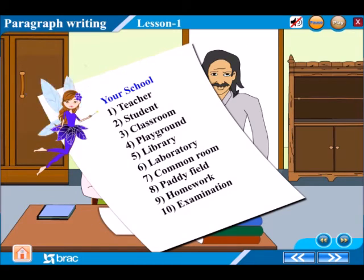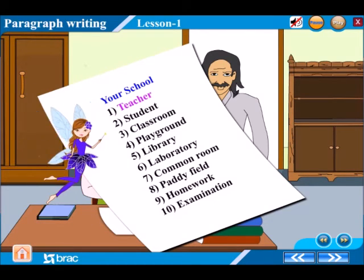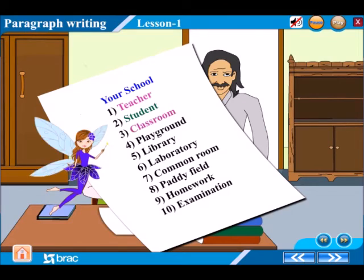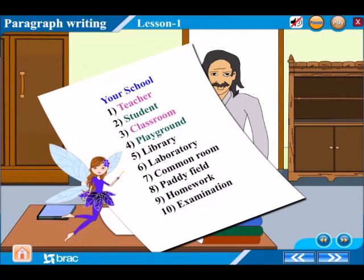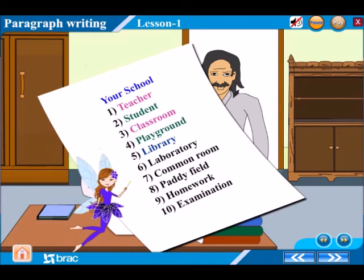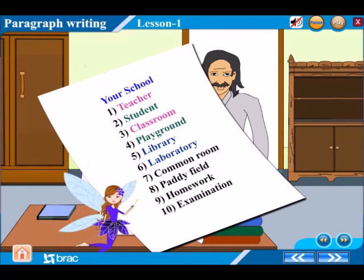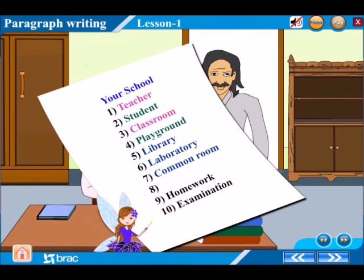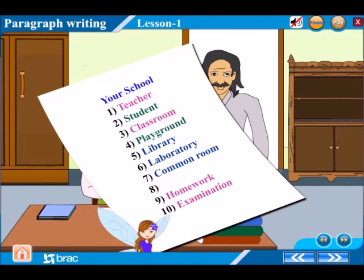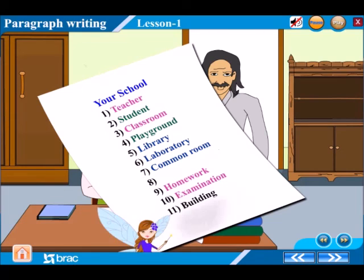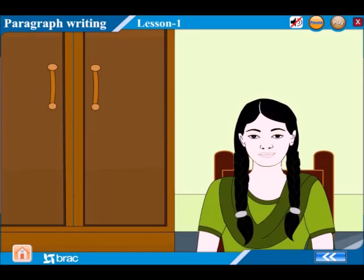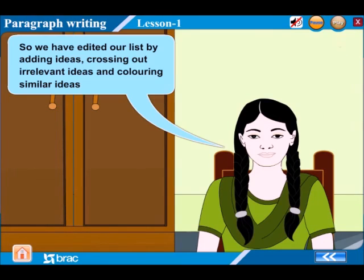Your school — edited list: Number 1 Teacher, Number 2 Student, Number 3 Classroom, Number 4 Playground, Number 5 Library, Number 6 Laboratory, Number 7 Common Room, Number 9 Homework, Number 10 Examination, Number 11 Building, Number 12 Games. So we have edited our list by adding ideas, crossing out irrelevant ideas, and coloring similar ideas.